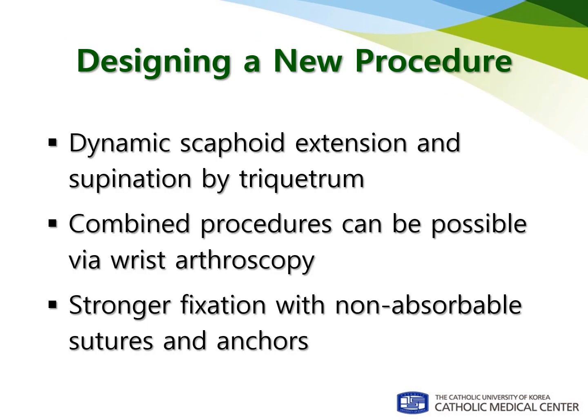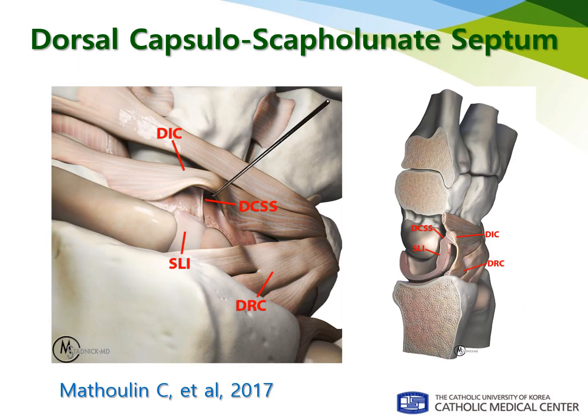Here I would like to introduce my arthroscopic procedure to stabilize the scapholunate and lunotriquetral joint by tightening up the dorsal intercarpal ligament. As Dr. Mathulin and Hale talked about the dorsal capsular ligament repair technique, the DCSS plays an important role to connect the dorsal intercarpal ligament and scapholunate intercarpal ligament.